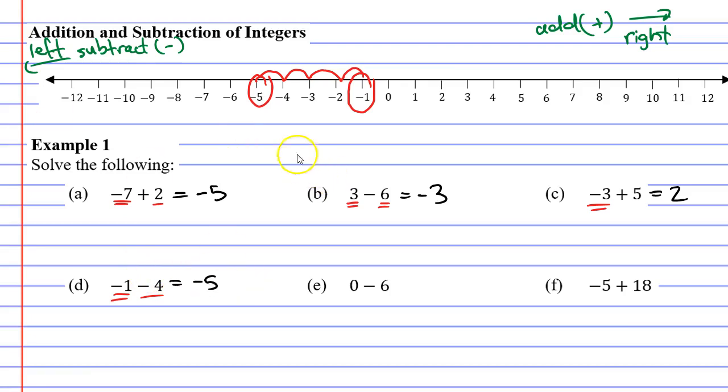Now we're on to question E. This time we're actually starting on the 0, which is perfectly fine. We are subtracting, or moving to the left, 6 times: 1, 2, 3, 4, 5, 6. You'll notice this time we actually land on negative 6.